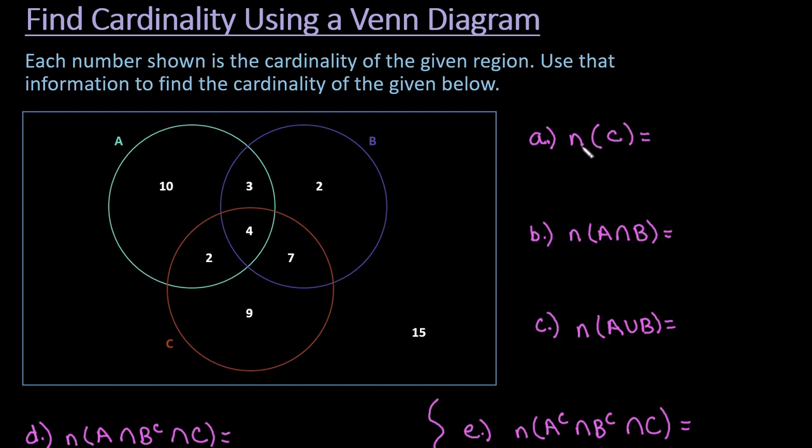So the first one that we're looking for is the total number in set C. So that means any value that shows up inside of set C. Basically what I'm going to do for this one is I'm going to take and add all of the numbers that show up in set C. So I'm going to take 2 plus 4 plus 7 plus 9 and then add those together. So it doesn't matter how you add them but you would end up with a total of 22 because 2 plus 4 is 6, 6 plus 7 is 13, 13 plus 9 gives us a total of 22. So when you see the n in front of a set it's just saying the total number.